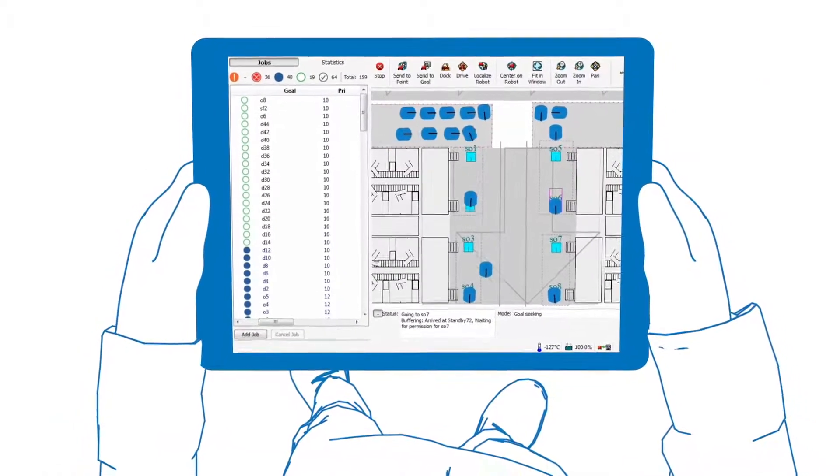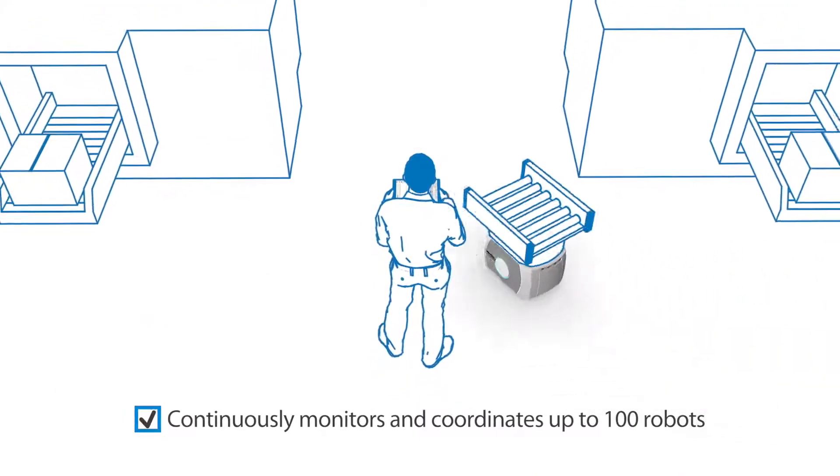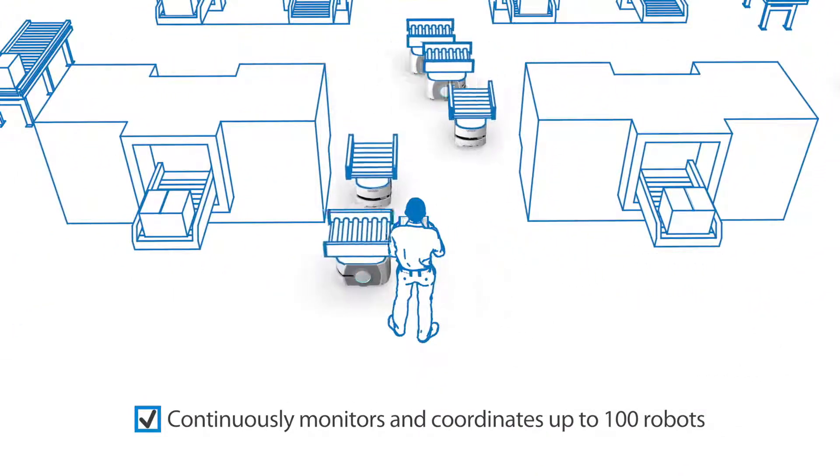Like an air traffic controller, Enterprise Manager continuously monitors and coordinates fleets of up to 100 mobile robots in highly dynamic environments like factory floors and warehouses.